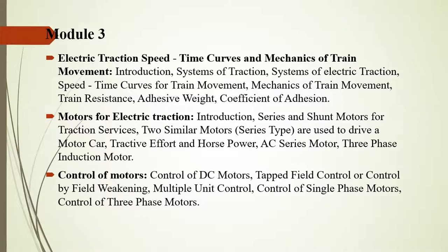Module 3 covers the electric traction system — different types of electric traction systems, speed-time curves, and mechanism of train movement. Then the motors for electric traction: series and shunt motors used for traction service, tractive effort and horsepower, AC series motor, and three-phase induction motor. Then controlling of the motors — control of DC motor, single-phase motor, and three-phase motor — which may be tap field control or field control, and multiple unit control for the multiple motors used in the traction system.